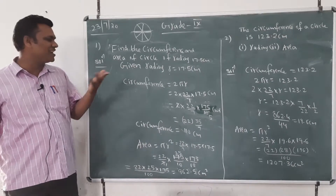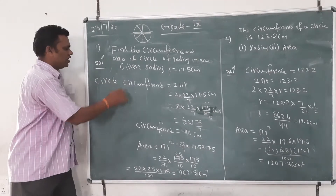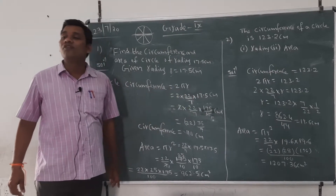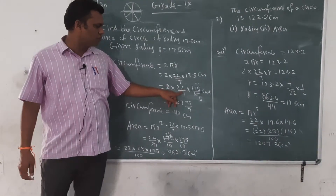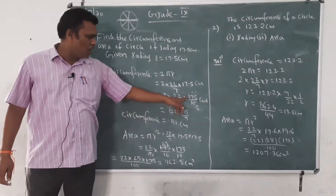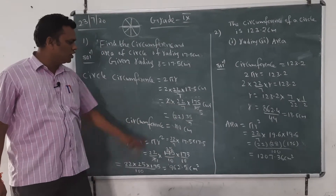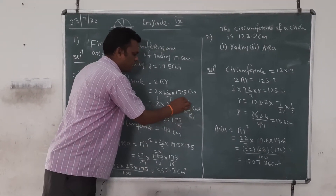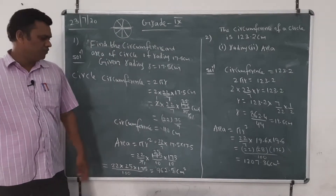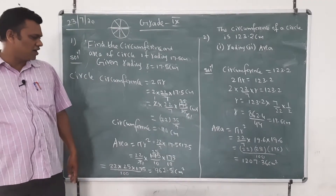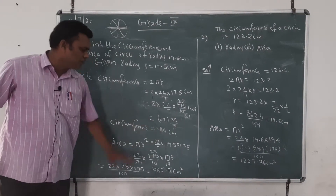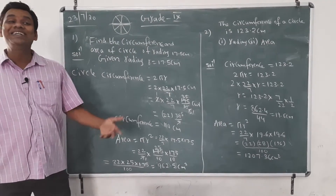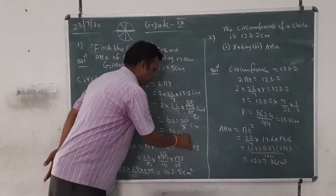Circumference of a circle equals 2πr, that is 2 × (22/7) × r. With r = 17.5 centimeters, we write 17.5 as 175/10. Simplifying: 2 × 22/7 × 175/10. We cancel 7 into 175 to get 25, giving 2 × 22 × 25/10 = 2 × 22 × 5/10 — wait, 7 × 5 = 35 cancels with 175, leaving 22 × 5 = 110 centimeters. The circumference is 110 centimeters.